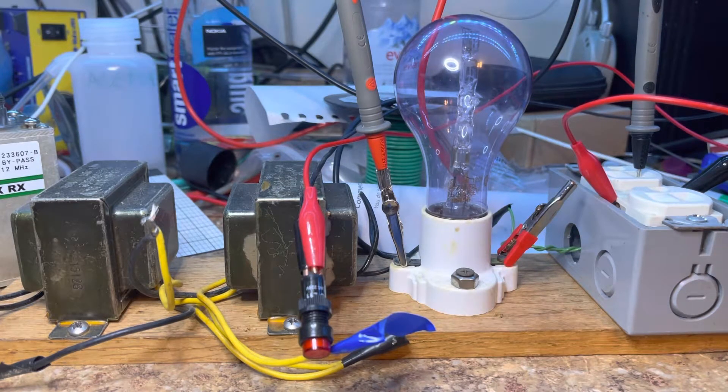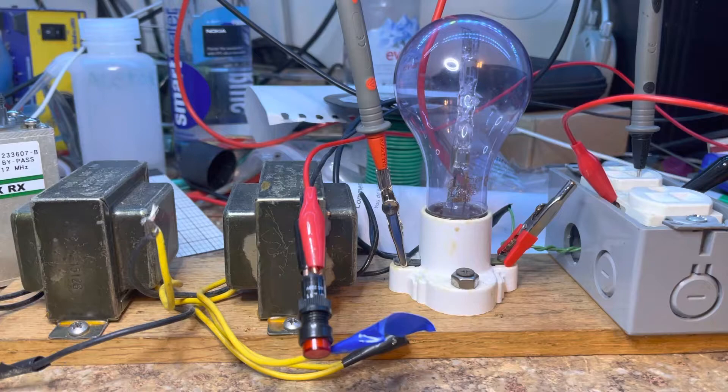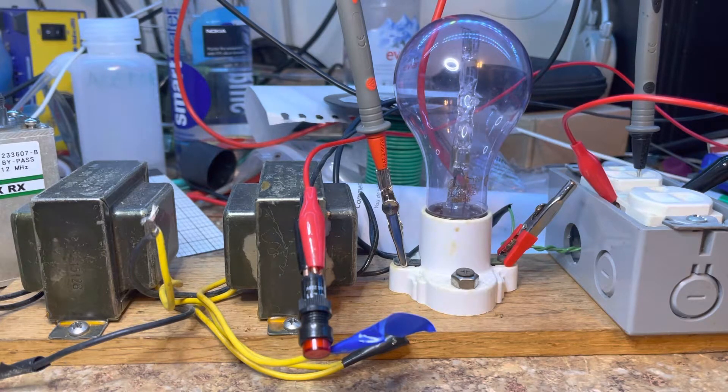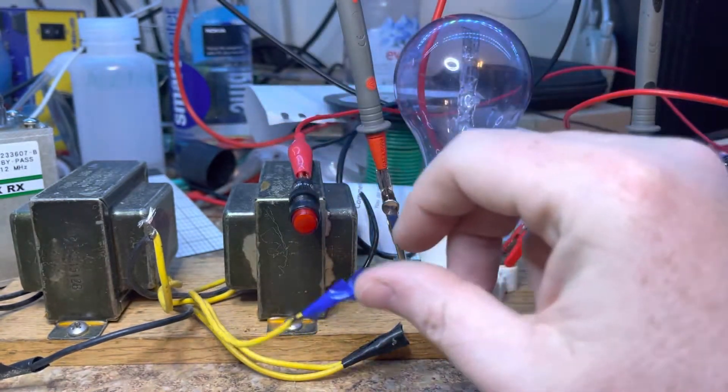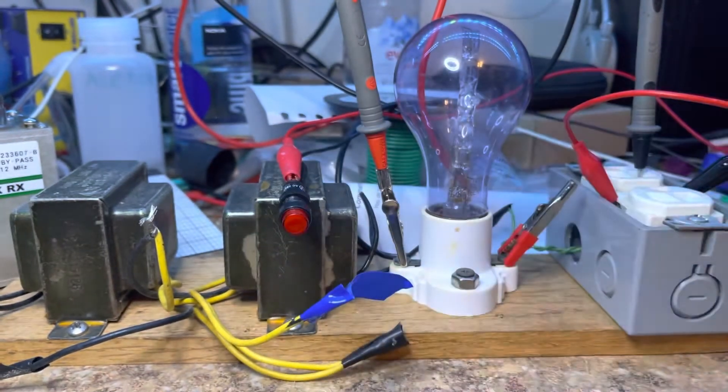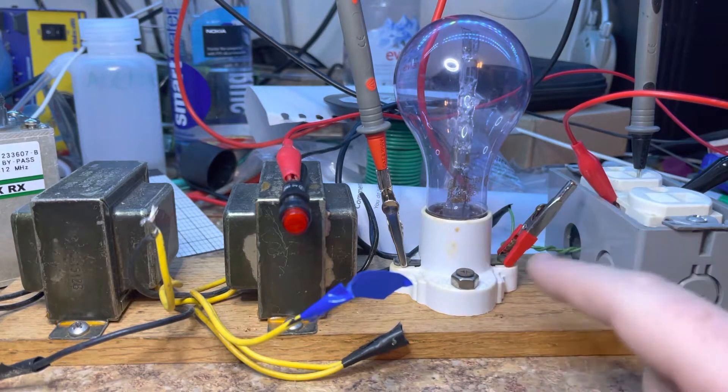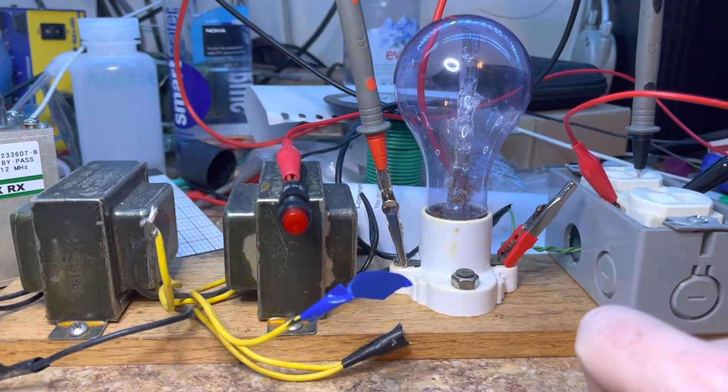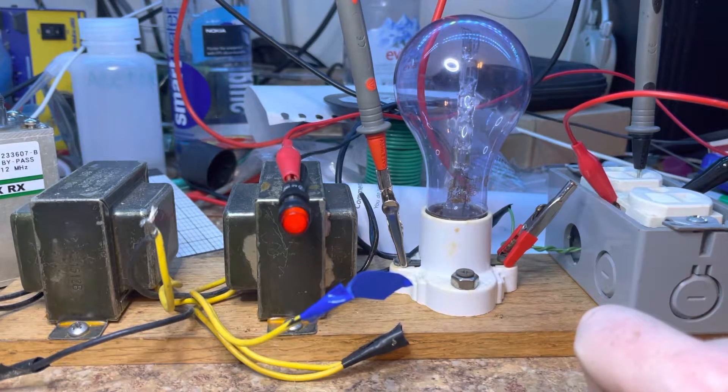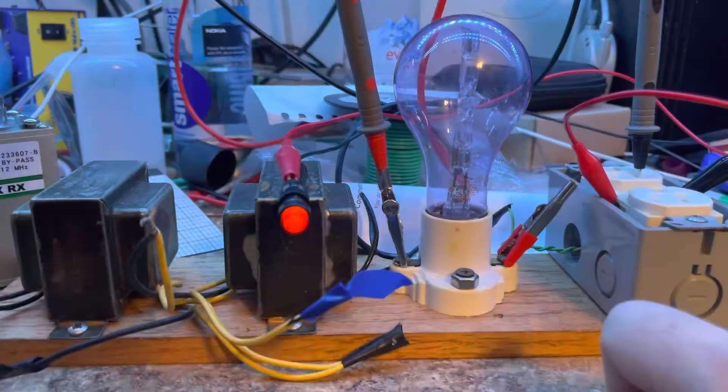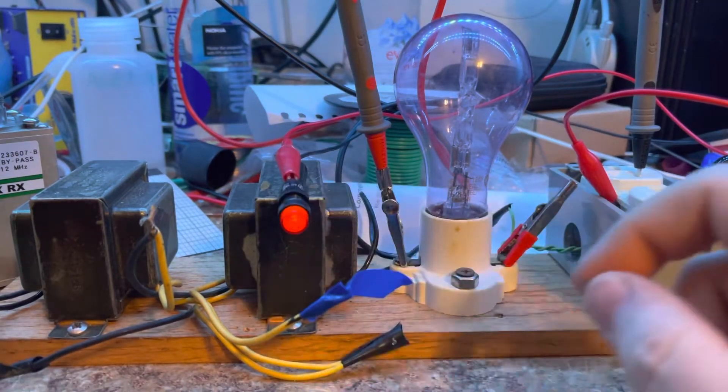And what that does is it's kind of a current limiting device and also gives you some indication that hey, what you have turned on is seriously shorted. So this is important like if you're using a tube amplifier or something like that. So I'll show you how this works normally here. Just watch that. I'm looking at the voltage here right now, it's 16 volts output.